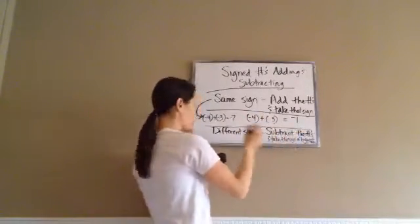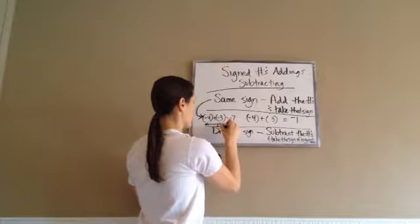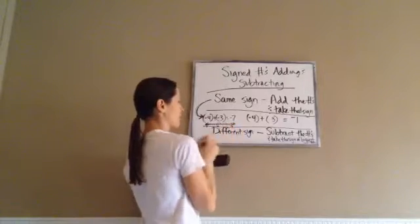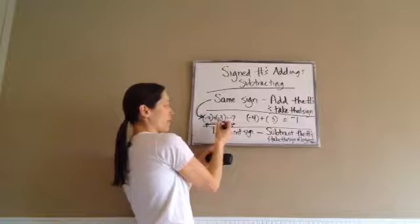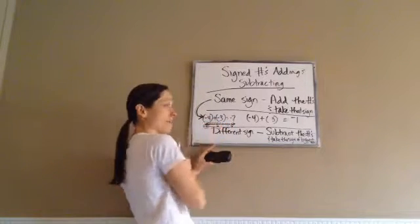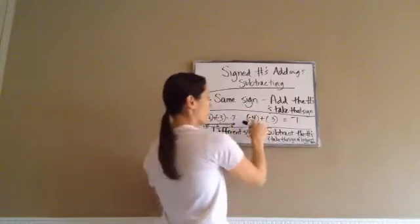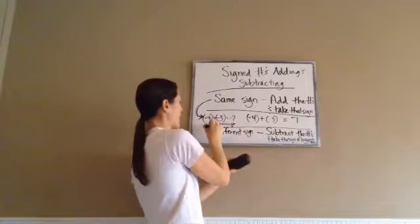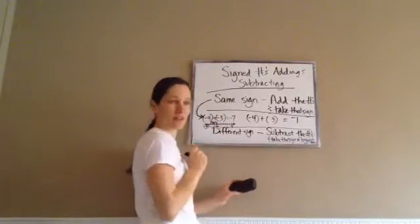Now if I actually did these on a number line: negative 4 — 1, 2, 3, 4 — and then plus another negative 3 — 1, 2, 3 — I end up at negative 7. Now let's look at the other one: negative 4 — 1, 2, 3, 4 — and a positive 3, which means you go to the right — 1, 2, 3 — what do I end up with? A negative 1. Isn't that cool?